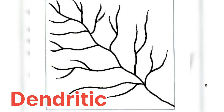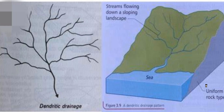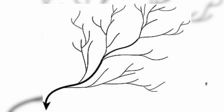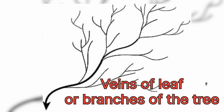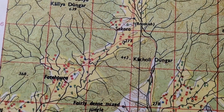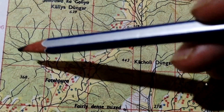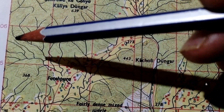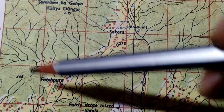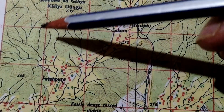The most common drainage pattern is the dendritic pattern, named after the Greek word 'dendron' meaning tree. This pattern resembles the veins of a leaf or the branches of a tree. If you find a river system that flows like a leaf or tree branches, it is a dendritic drainage pattern.